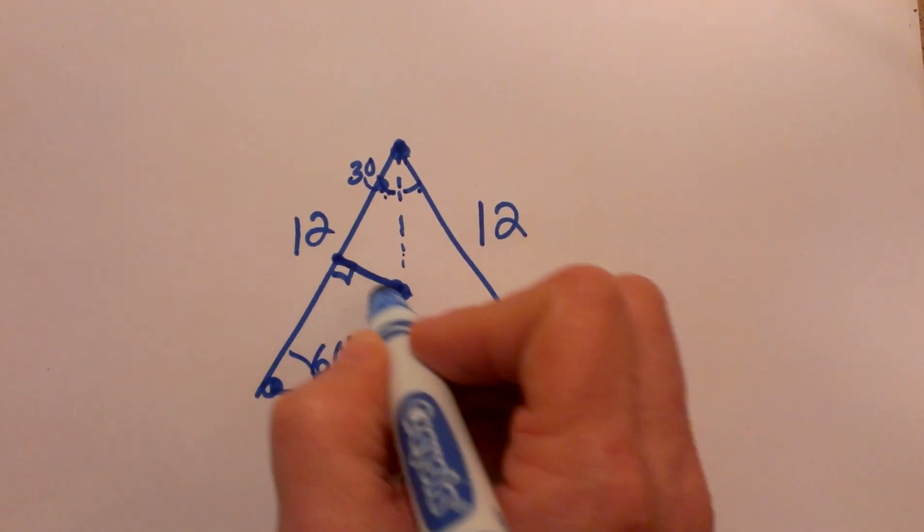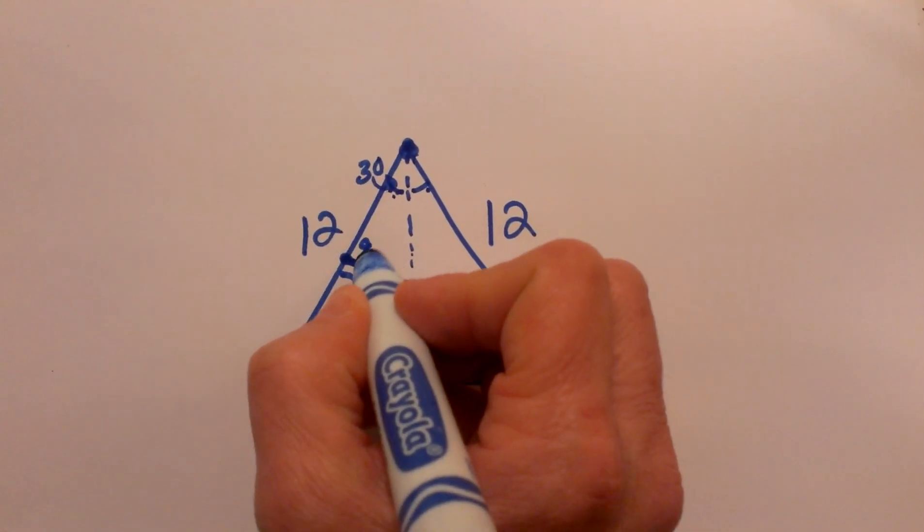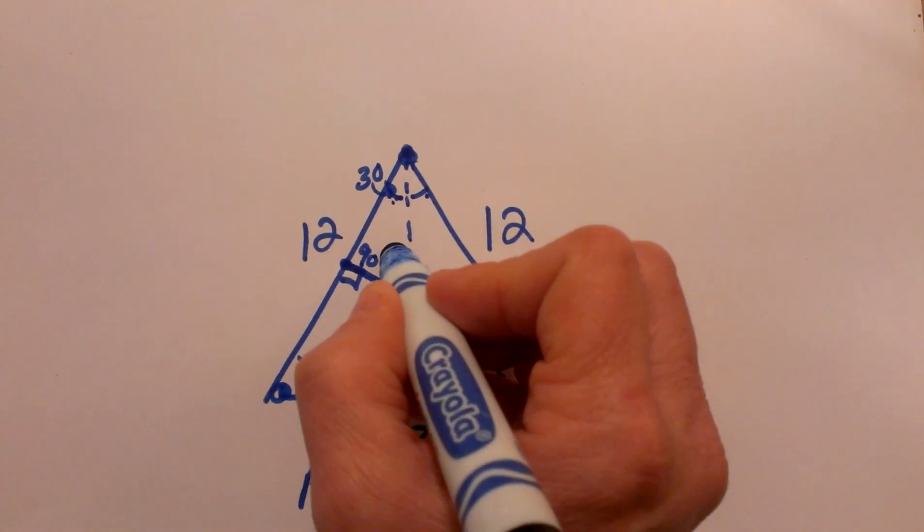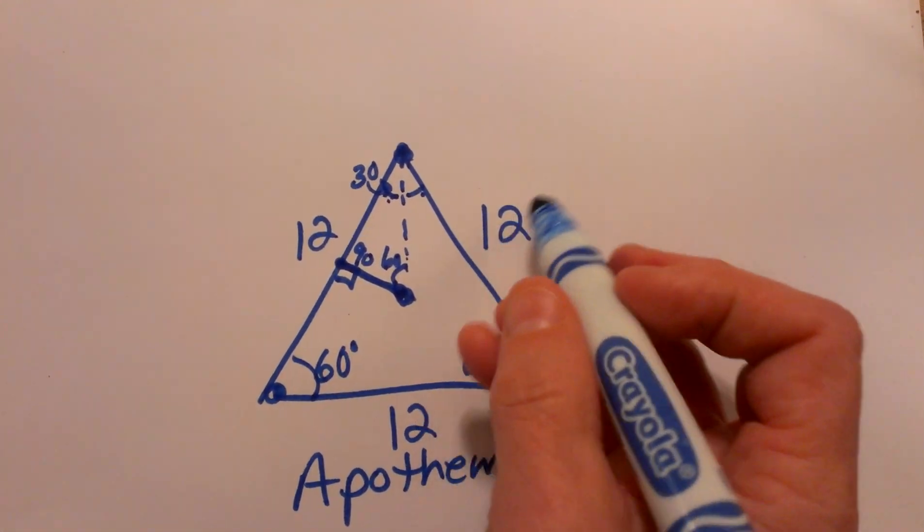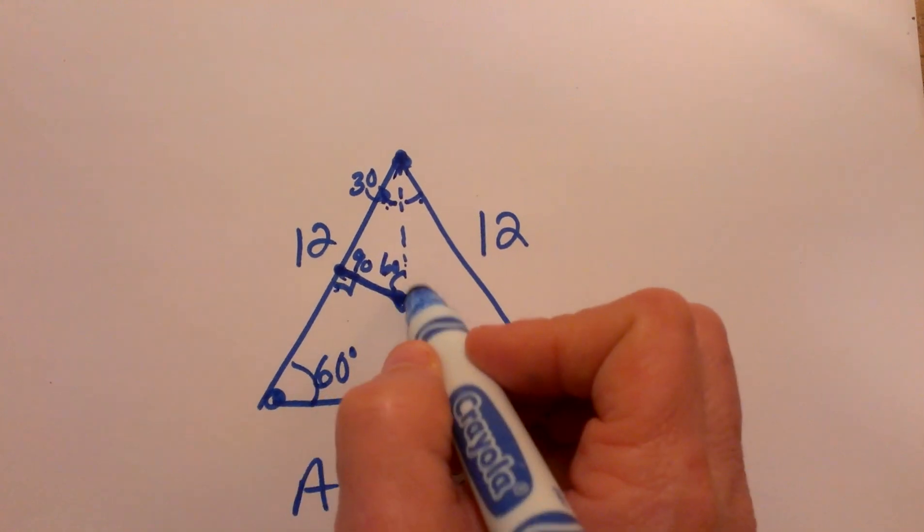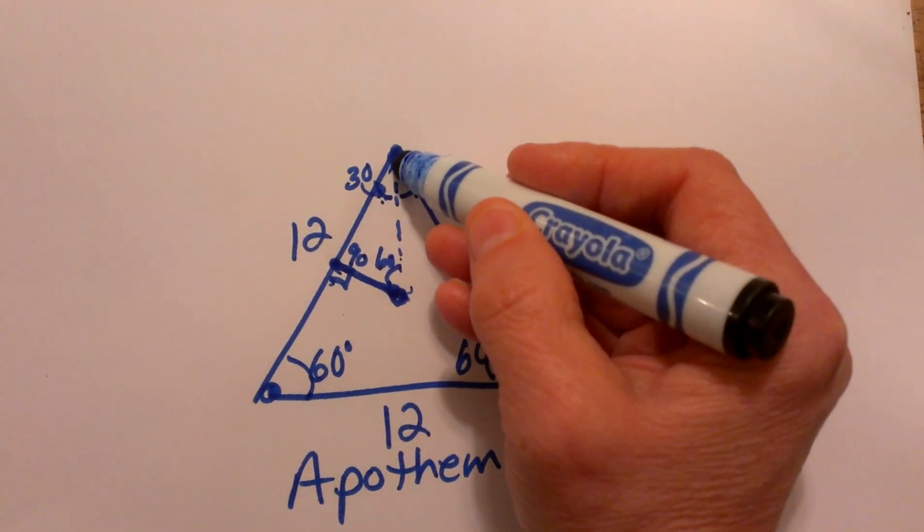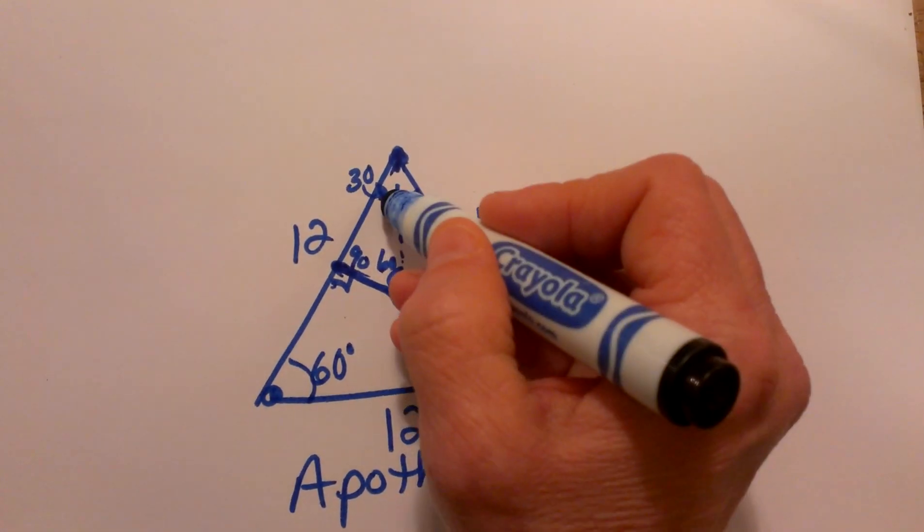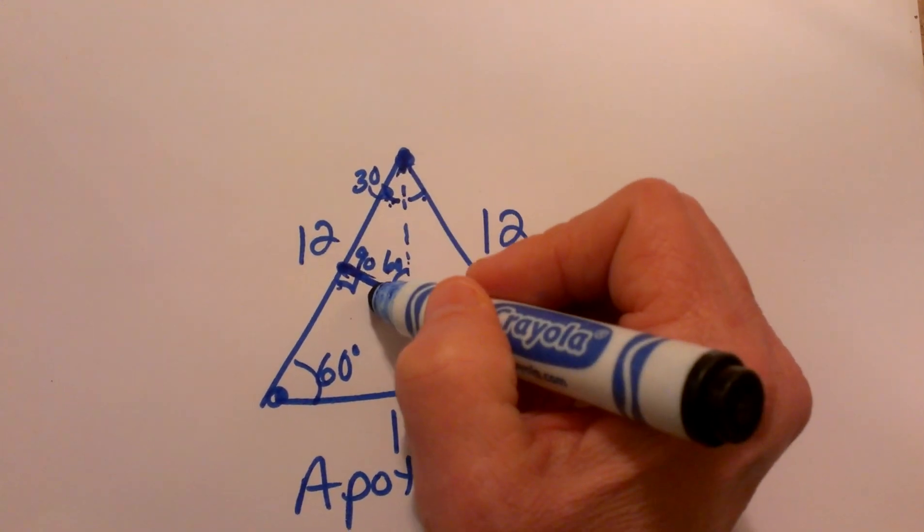Since this apothem is the right angle, that is 90, so that means the central angle must be 60. So my apothem, if you look at this right triangle right here, the apothem is the short leg because it is opposite the 30 degree angle.